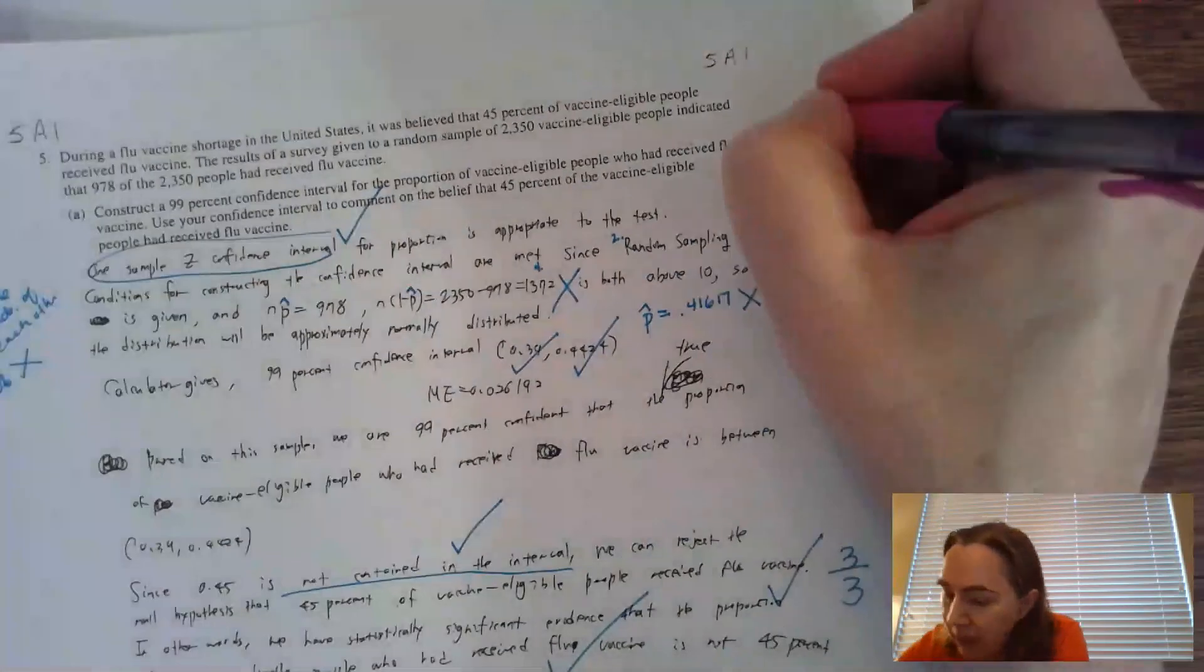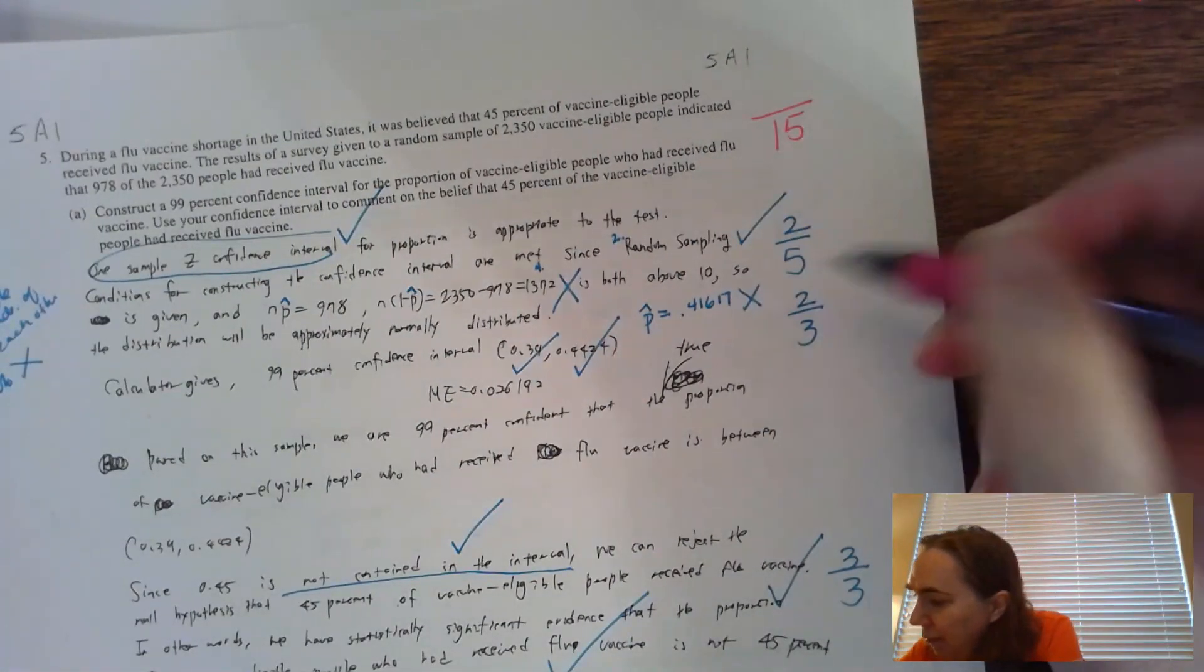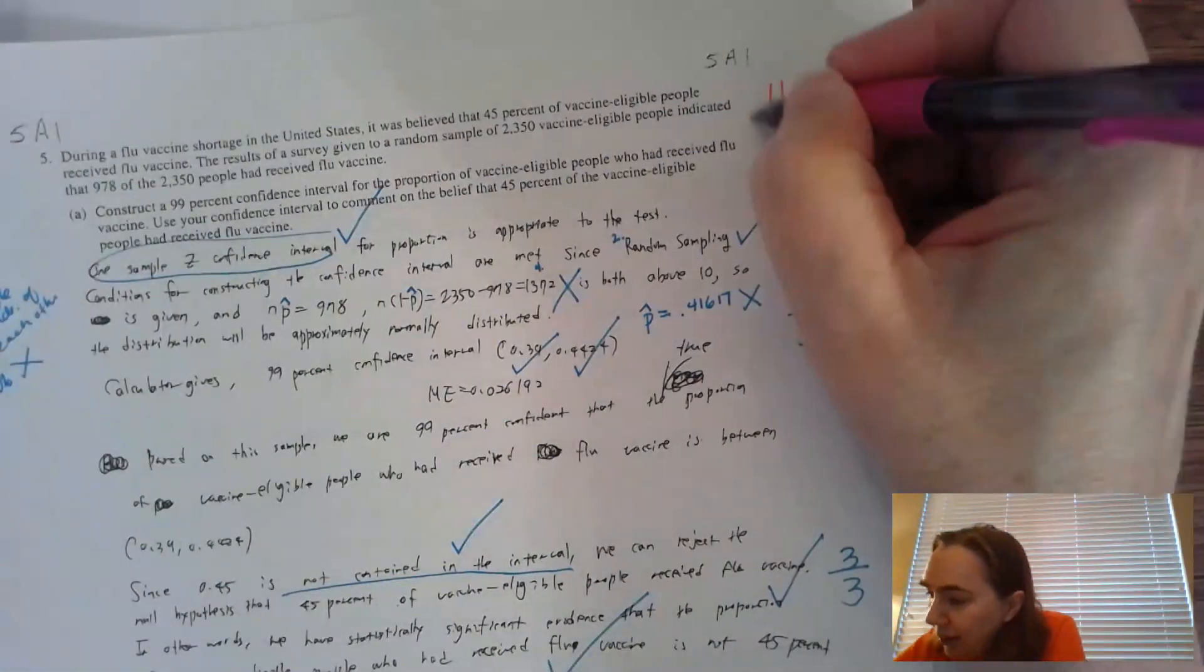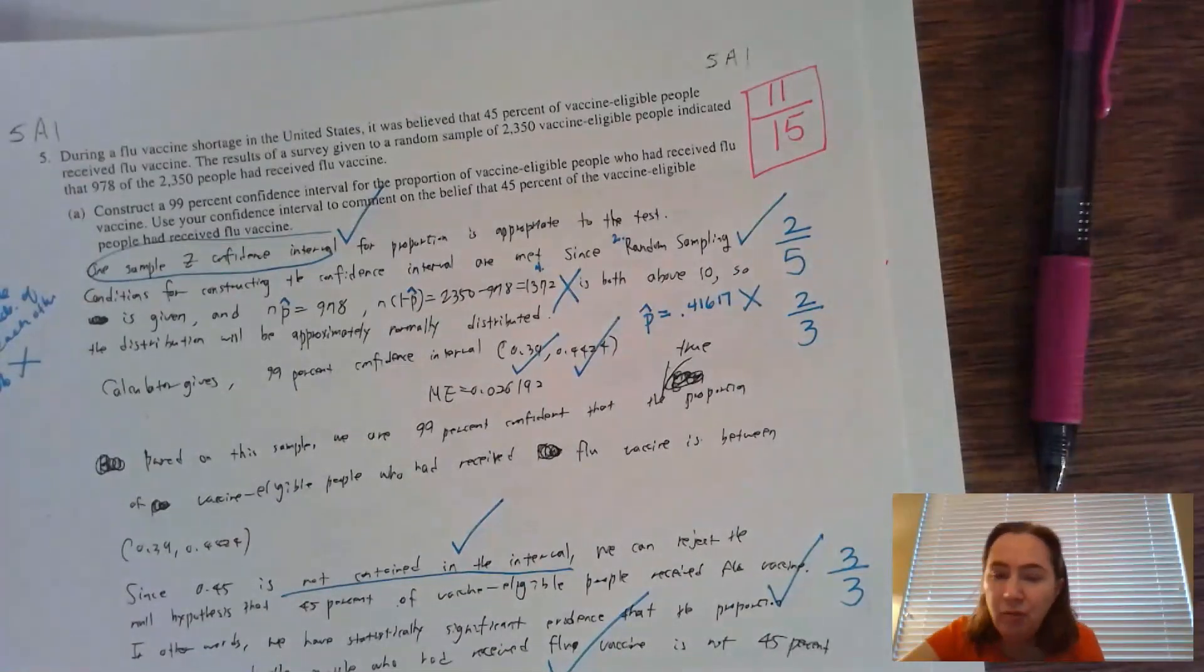Now going back to the total score: 4 plus 3 is 7, 7 plus 3 is 10, 10 plus 5 is 15. There are 15 points total. My person missed four, so they got 11 out of 15. That marks the end of the grading of this question from 2011B. Bye-bye!